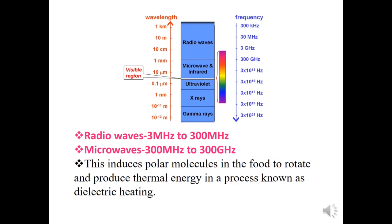Plastic, glass, or ceramics — that is, utensils — do not absorb these radio waves, so microwave cooking is very safe. This shows the wavelength and frequency range of different types of waves. Radio waves are in the frequency range of 300 kilohertz to 300 gigahertz and wavelength of 1 millimeter to 1 kilometer. Microwaves range from 300 megahertz to 300 gigahertz.